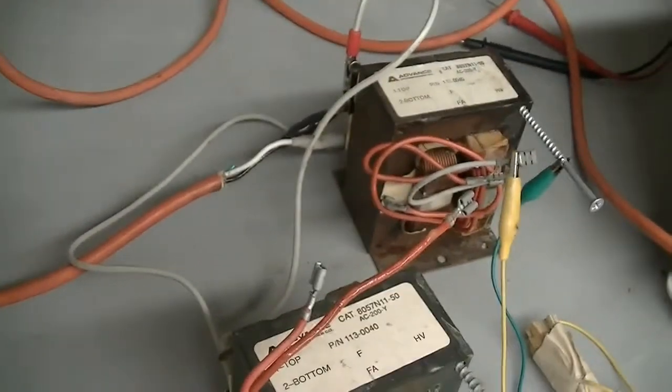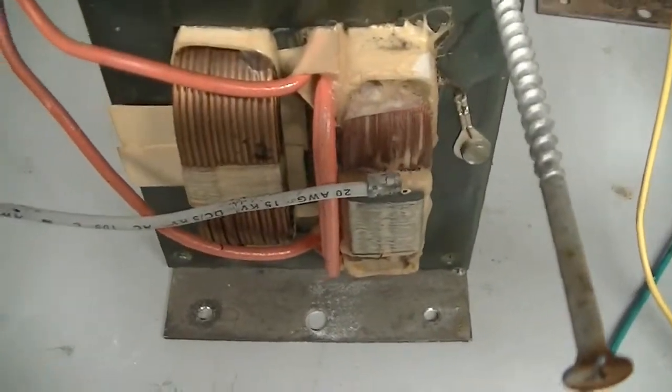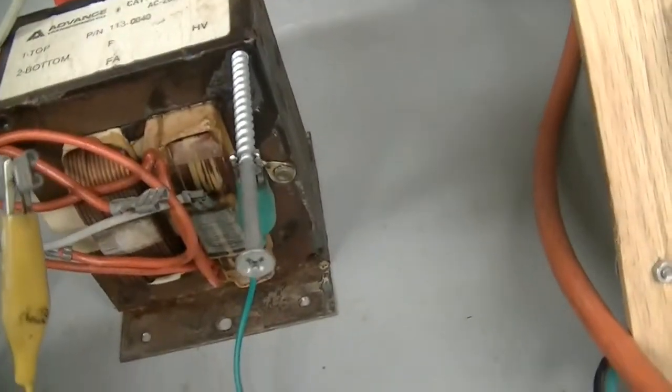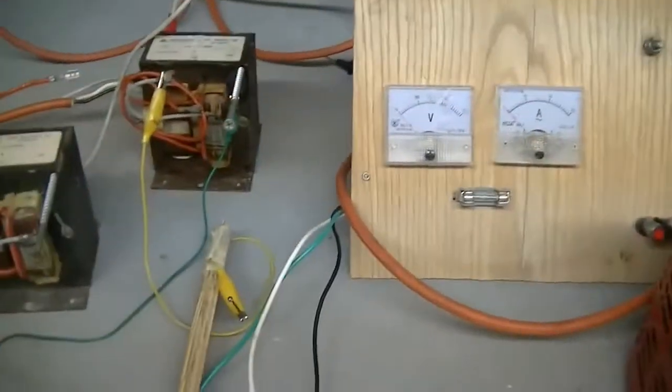Well, both primaries are in parallel. Secondaries are in series. So the input or output of that high voltage coil goes into the ground of that one, and the output of that one goes to the ground of this one, which is for 4,000 volts with 120 volts input.